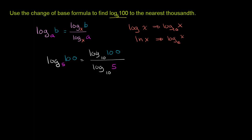We don't even need a calculator to evaluate the top part. Log base 10 of 100 — what power do I have to raise 10 to in order to get 100? The second power. So this numerator is just equal to 2, and it simplifies to 2 over log base 10 of 5. We can now use our calculator, because the log function on a calculator is log base 10.